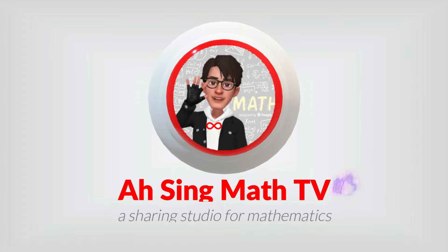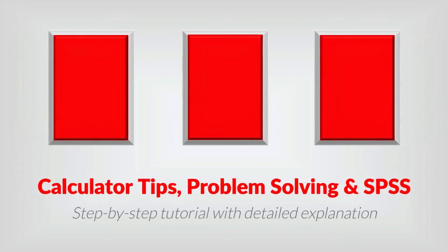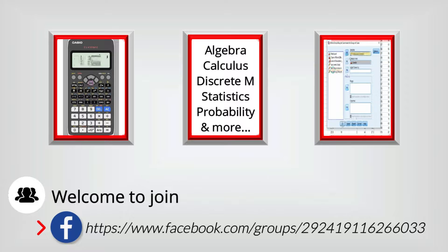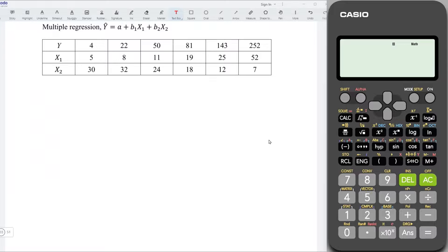Hi, this is Asin. You are now watching Asin Mad TV. Today, I would like to share how to form a regression line for two-vector multiple regression and determine its R-squared using a calculator.